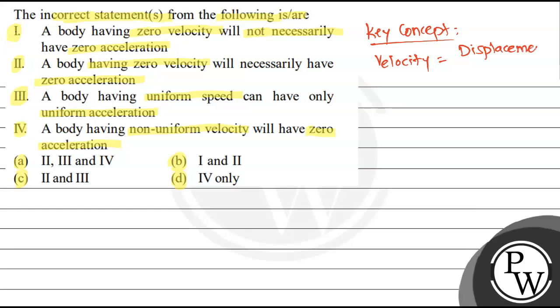Displacement is basically the shortest distance traveled by the object. Speed formula: distance by time. Distance is total path traveled by the object.